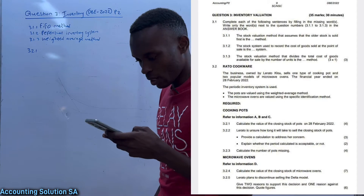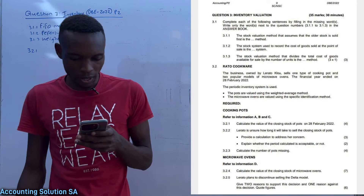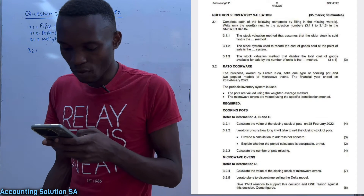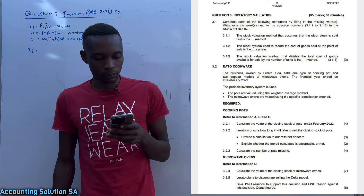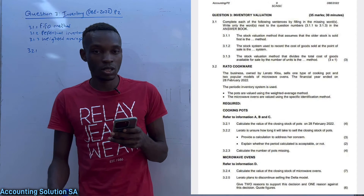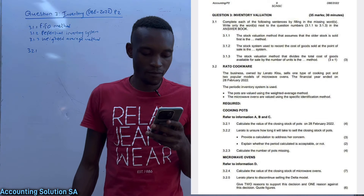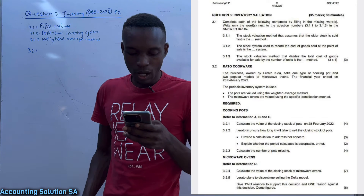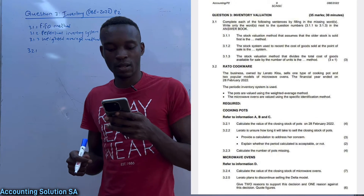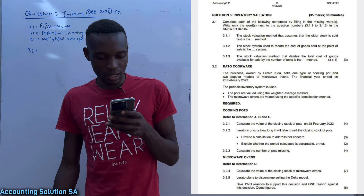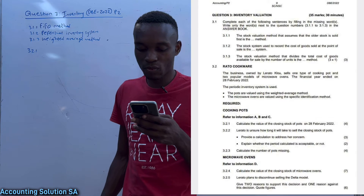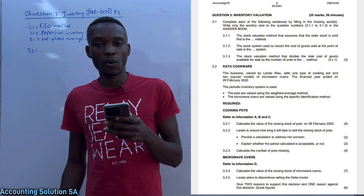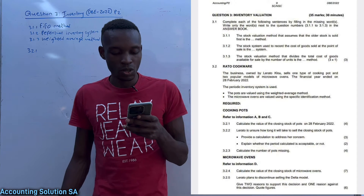Question 3.2: Rato Cookware is a business owned by Rato. They sell one type of cooking pot and two popular models of microwave oven. The financial year ends 28 February 2022. The periodic inventory system is used in this business. Pots are valued using the weighted average method and microwave ovens are valued using the specific identification method. We have to calculate the value of closing stock of pots on 28 February 2022.